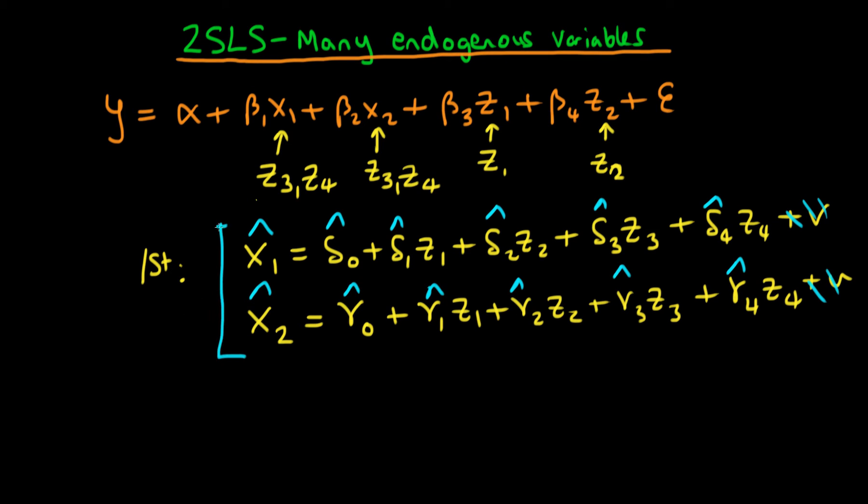So both of these two regressions defines our first stage regression when we have multiple explanatory variables. The second stage is much easier. It's just exactly the same form as we had previously when we only had one explanatory endogenous variable. We just have a regression of y on, instead of x1, we replace this with x1 hat. Then we replace x2 by x2 hat. And we also include our variables z1 and z2 in this regression, where z1 and z2 are exogenous.